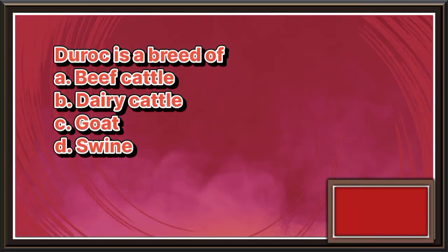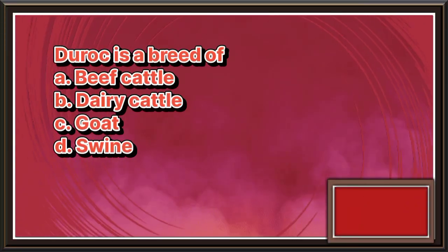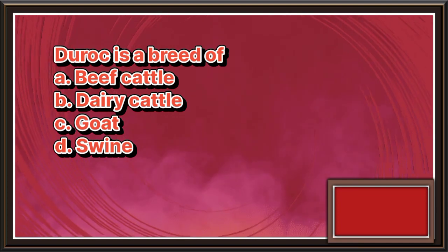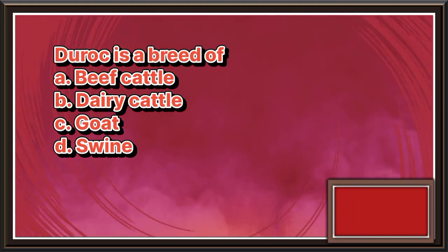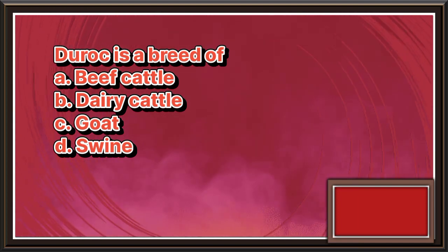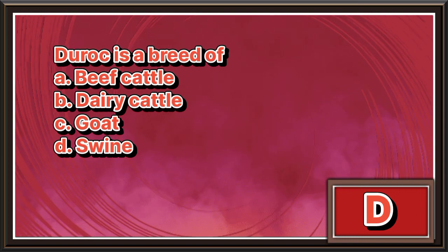Duroc is a breed of: A. Beef cattle. B. Dairy cattle. C. Goat. D. Swine. The answer is letter D.